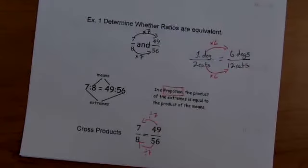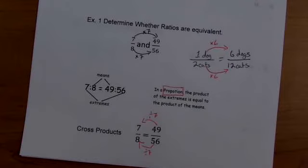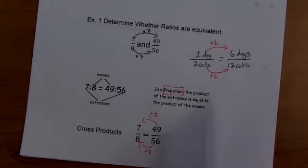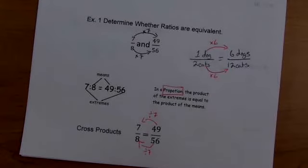You can also do reverse. 49 divided by seven is seven. And 56 divided by seven is eight. So you can go backwards or you can go forwards. And if it's the same number, then you know it's equivalent. Just like we did here with one dog to two cats is the same thing as six dogs to 12 cats. So again, ratios are basically just a fraction. That's all it is. It's a comparison of two things. And a proportion means that they are the same.